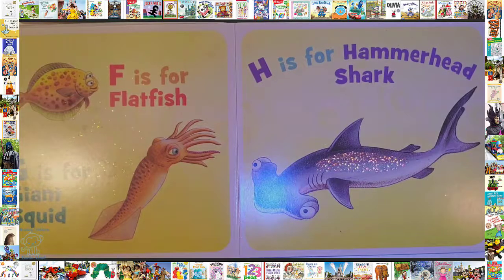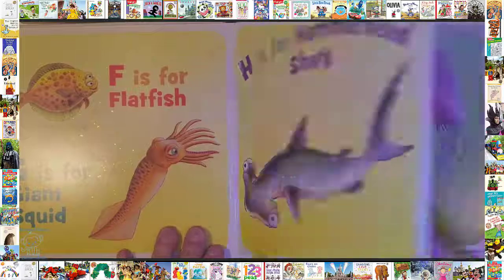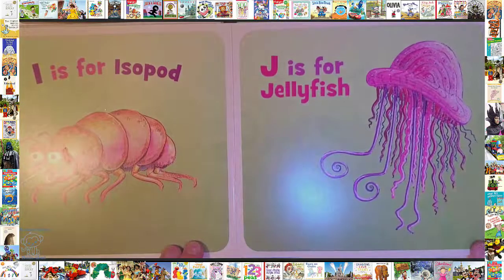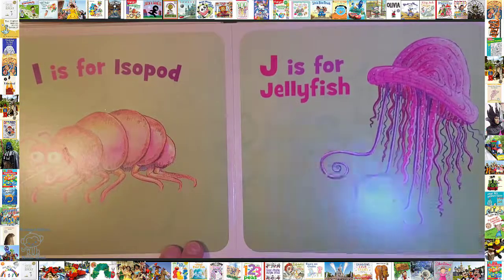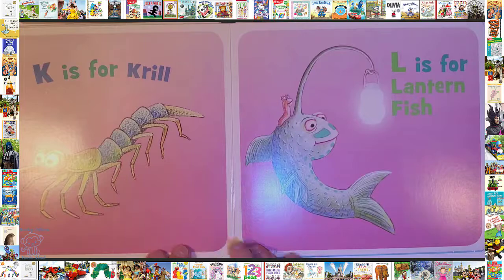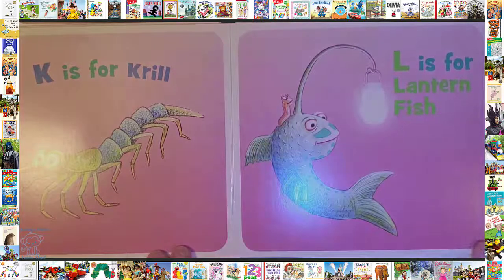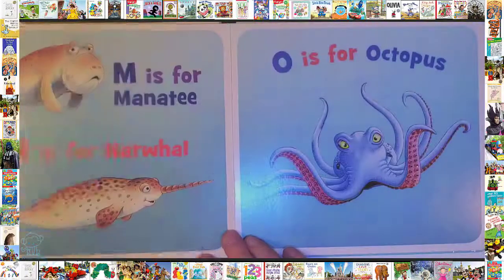G is for Giant Squid. H is for Hammer Heart Shark. I is for Isopod. J is for Jellyfish. K is for Krill. L is for Latin Fish.